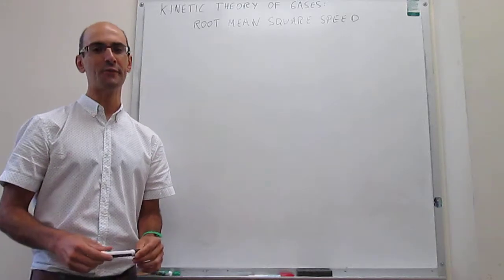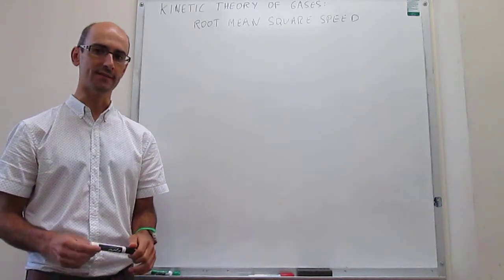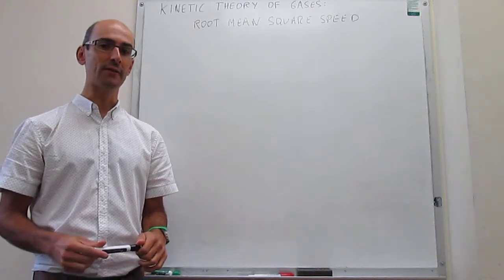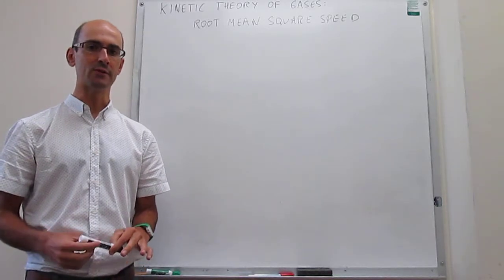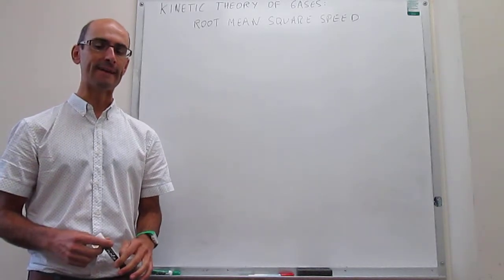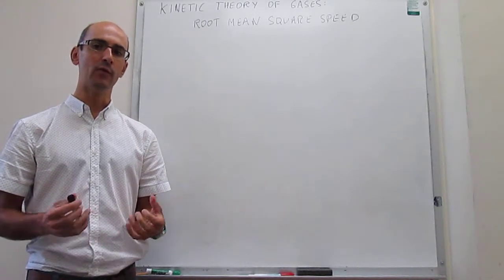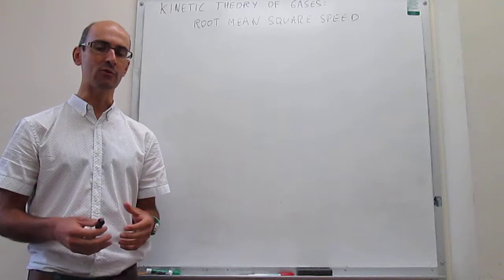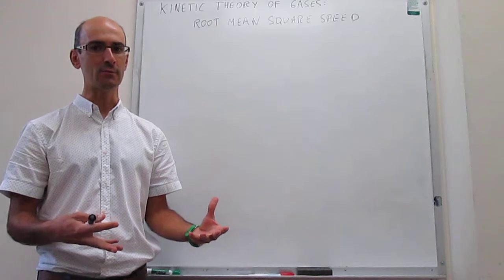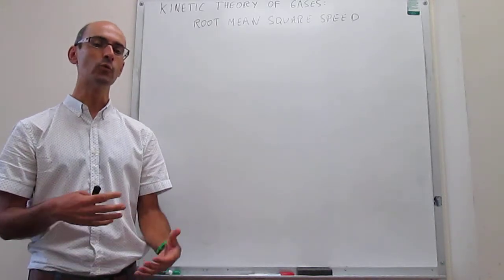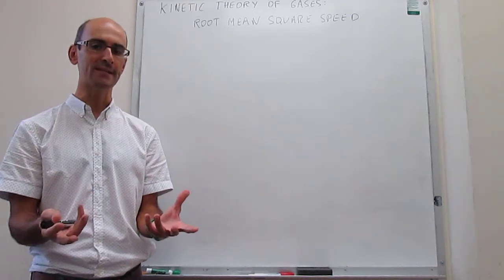In this video we find an expression for the root mean square speed according to kinetic theory of gases. In the last couple of videos we introduced the concepts behind kinetic theory of gases and derived an expression for the pressure and kinetic energy for a gas under ambient conditions. Those expressions are very useful because they allow us to connect the macroscopic and microscopic world. Pressure is a macroscopic phenomenon, but we've been able to relate it to the individual microscopic behavior of gas particles.